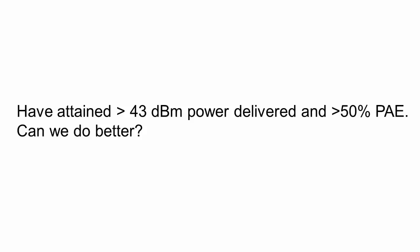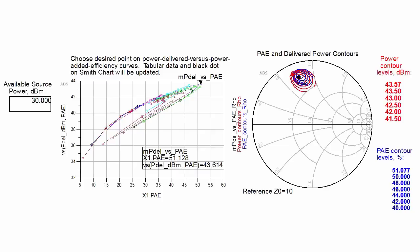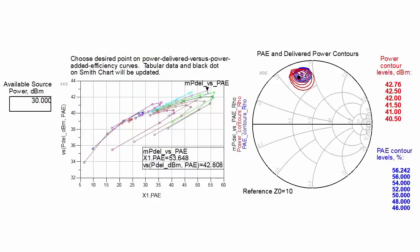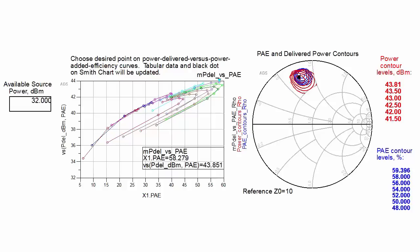At this point I want to show performance tradeoffs you could get by changing the bias point. This plot shows power delivered versus PAE for the original class A bias point. If we change the gate bias to minus 3 volts so the device is nearly off for small input signals you get these results. This shows a clear improvement in PAE but the output power and gain have dropped. If we now increase the source power from 30 to 32 dBm we get these results.